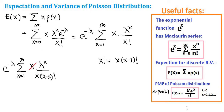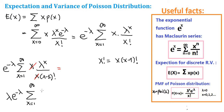Now we cancel out the x in numerator and denominator. Our next step is to make the power of lambda look like x minus 1, so we take one factor of lambda to the front. This gives us lambda times e to the negative lambda, times the summation from x equals 1 to infinity of lambda to the (x minus 1) over (x minus 1) factorial.